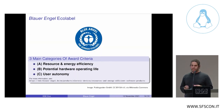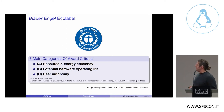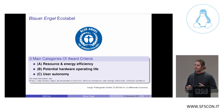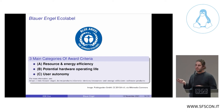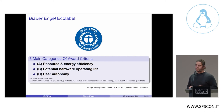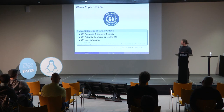Now let's get to what I'm calling the ABCs of the Blauer Engel Eco-label. There are three main categories in the award criteria. The award criteria are currently only for local software. In future revisions they want to include client-server software as well as mobile phones, but at the moment it's only local software.